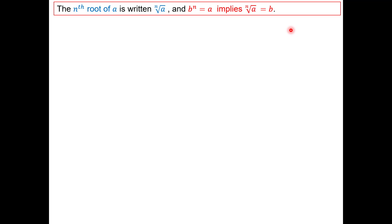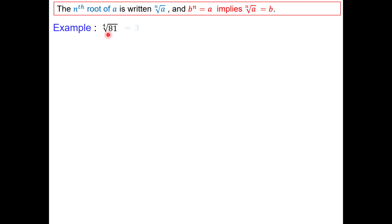The nth root of a is written with index n. If b to the n equals a, it implies that the nth root of a is b. So if you have some number raised to a certain power and get an answer, taking the nth root undoes that exponent and takes you back to the original number. For example, the fourth root of 81: what number times itself four times equals 81? It's 3, because 3 to the fourth is 81.